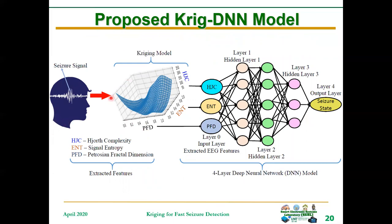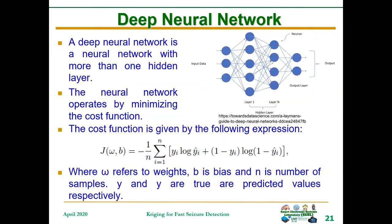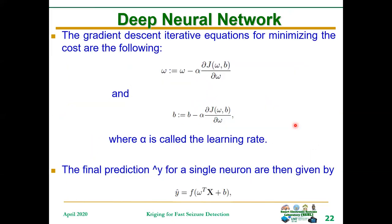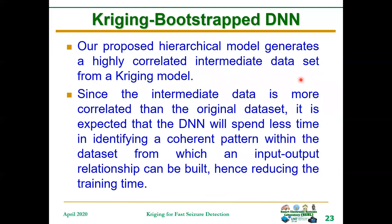This is the figure for the proposed Kriging-Bootstrapped DNN model. From the brain, we collect the signals, generate the Kriging model, and then the output of the Kriging model — which is now highly correlated — is passed into the DNN, which will spend less time in training and obtain the final seizure state. The DNN uses forward propagation to obtain the cost function, then backward propagation to obtain the weights and biases. The proposed hierarchical model generates a highly correlated intermediate data set from a Kriging model, and once passed into DNN, it trains in less time to obtain the final output.